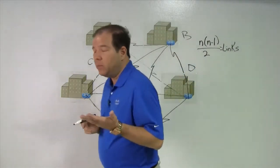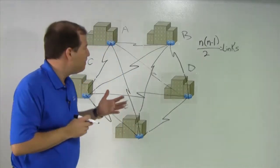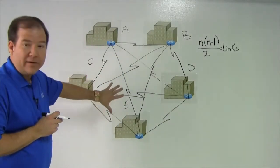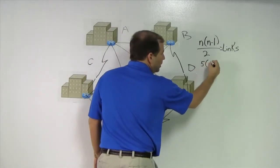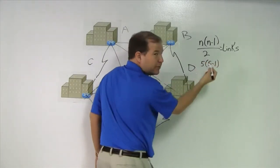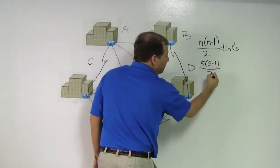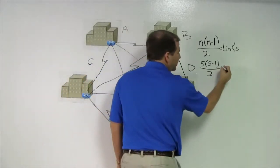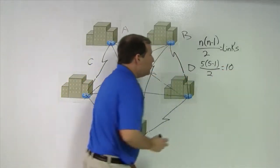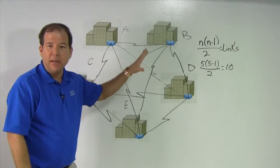n is the number of sites. In this case, we have five sites, so let's do the math. It's 5 times 5 minus 1, which is 4, divided by 2. 5 times 4 is 20. 20 divided by 2 is 10. According to this formula, we would have to have 10 links.